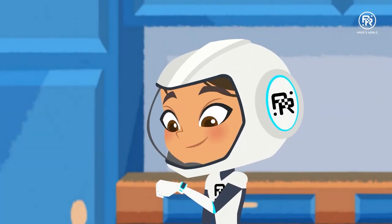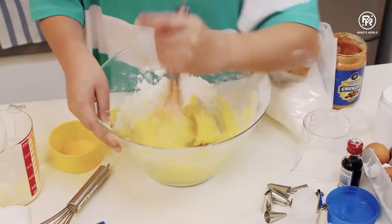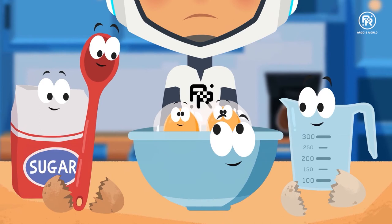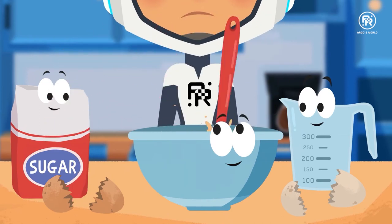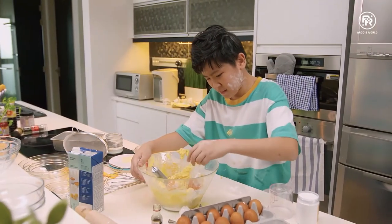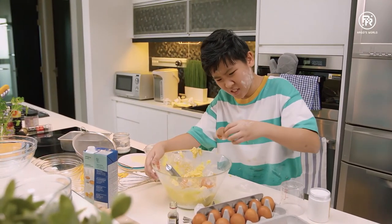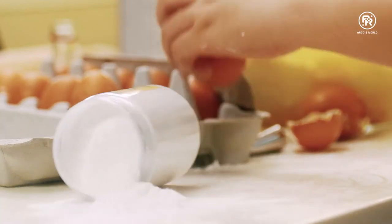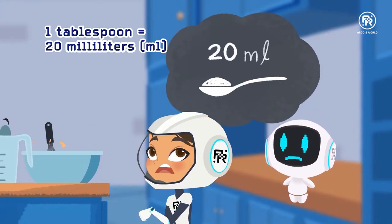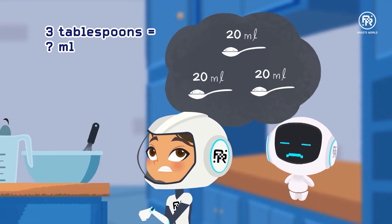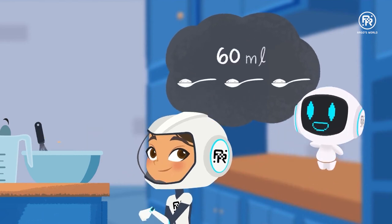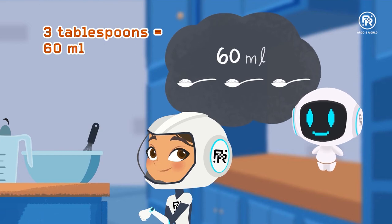Tyler, mix in the butter. 1 tablespoon is 20 milliliters, so 3 tablespoons equals... 20 times 3 is 60 — 60 milliliters! 3 tablespoons equals 60 milliliters.